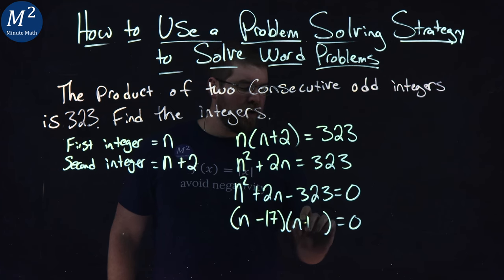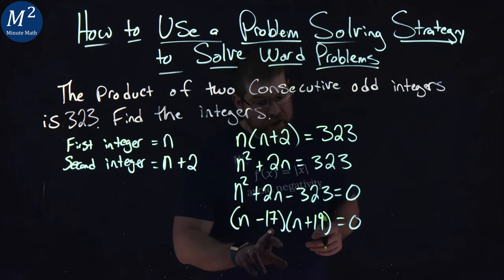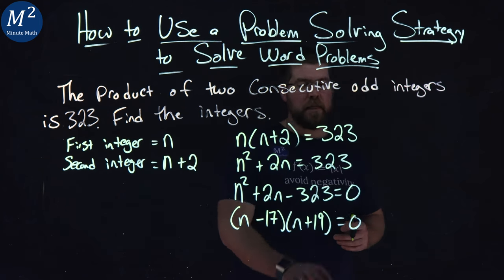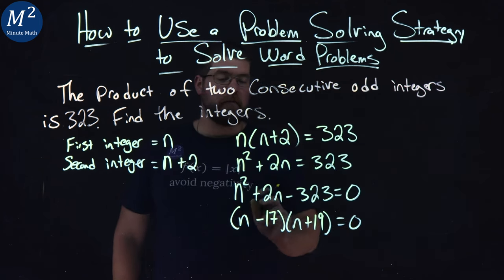17 times 19 is 323, or specifically negative 17 times positive 19. But they add together to be a positive 2.